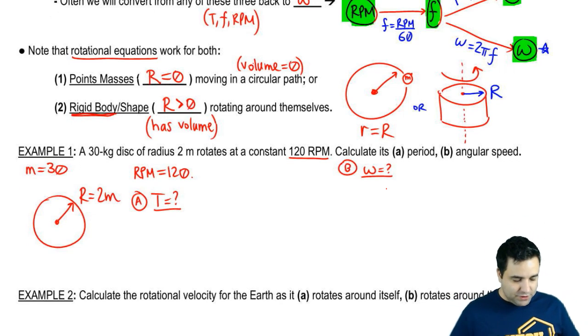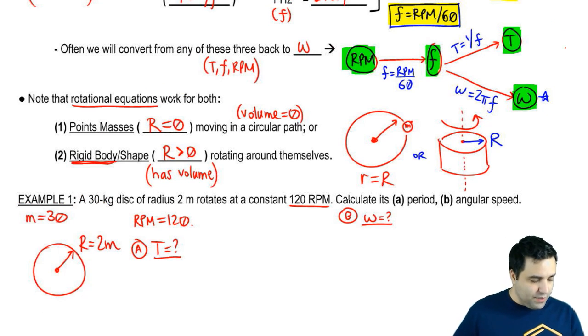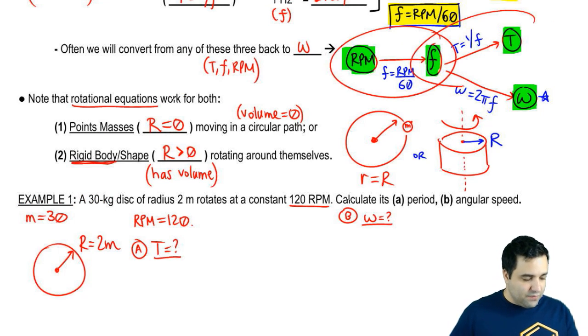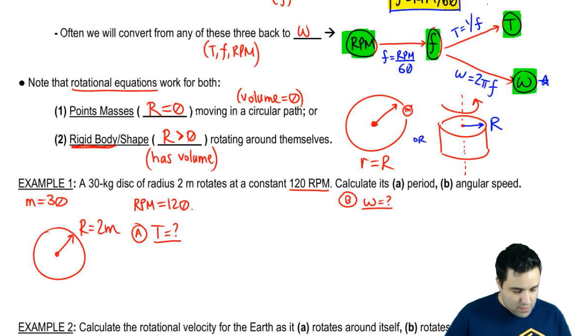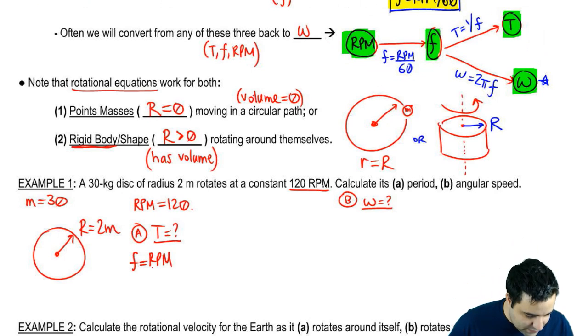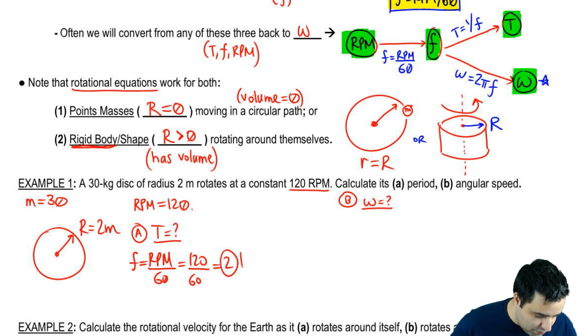For part A, I want to know what is big T. And for part B, I want to know what is omega. Angular speed, same thing as angular velocity, same thing as rotational velocity or rotational speed. So how do we tie it together? If you look at this little diagram here, we can convert from one to the other. I'm going to convert RPM into frequency, and then I'm going to convert from frequency into period and into omega. So frequency equals RPM over 60, so it's 120 divided by 60, which is 2 hertz.